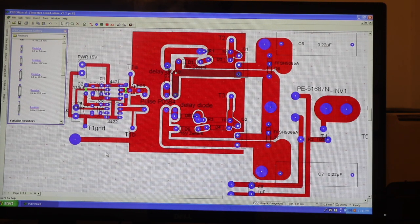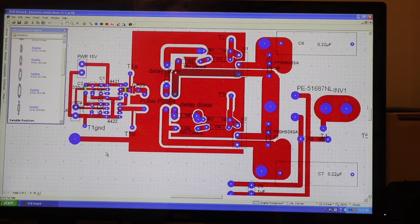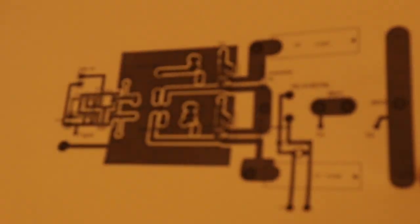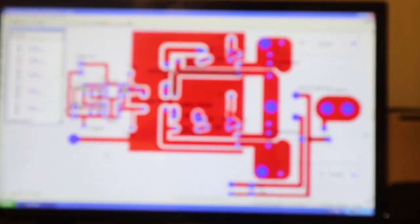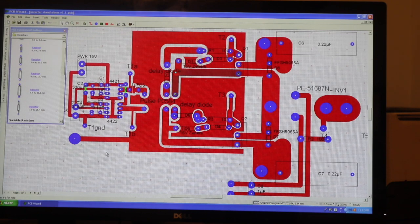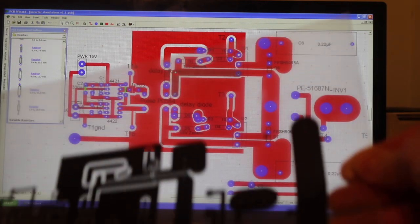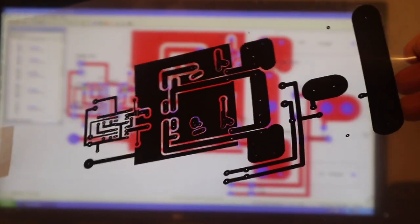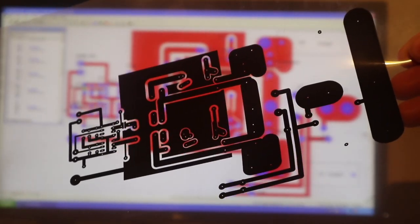We start with the computer rendering of the circuit board. After a printed copy is made on paper, just to make sure that everything is correct, we print it on transparency film, which I have done here. I make two copies and tape them together to make the traces extra dark.